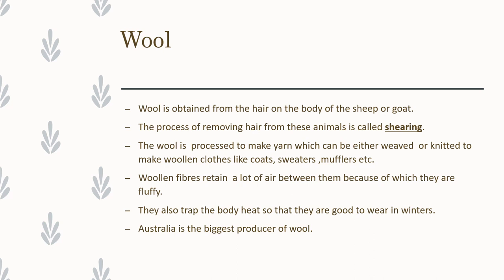Wool is obtained from the hair on the body of sheep or goat, and the process in which the hairs are removed from the body of these animals is called shearing. The wool produced is then processed to make yarn, and that yarn is either weaved or knitted to make woolen clothes of different kinds, like coats, sweaters, mufflers, etc. Woolen fibers are fluffy because they retain a lot of air between them, and because of this they trap body heat and keep us warm. So they are good to wear in winters.